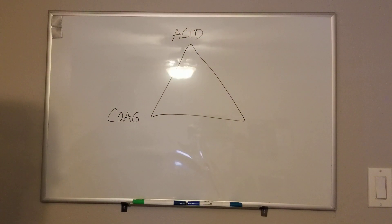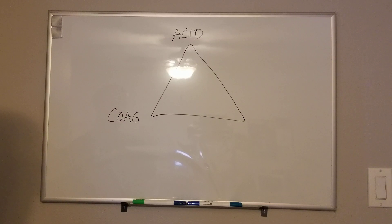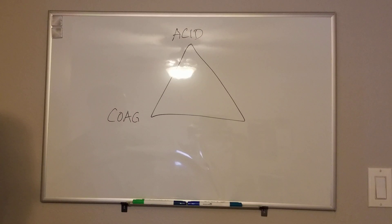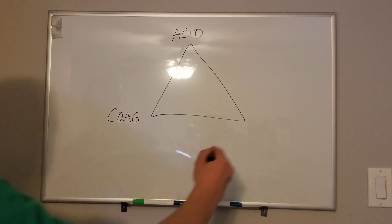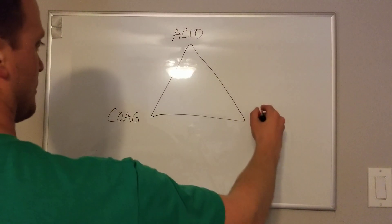Acidosis can be caused by lack of perfusion to end organs, which causes anaerobic metabolism and increases your acidotic byproducts, worsening your acidosis. The third part of the triad is hypothermia — low temperature.